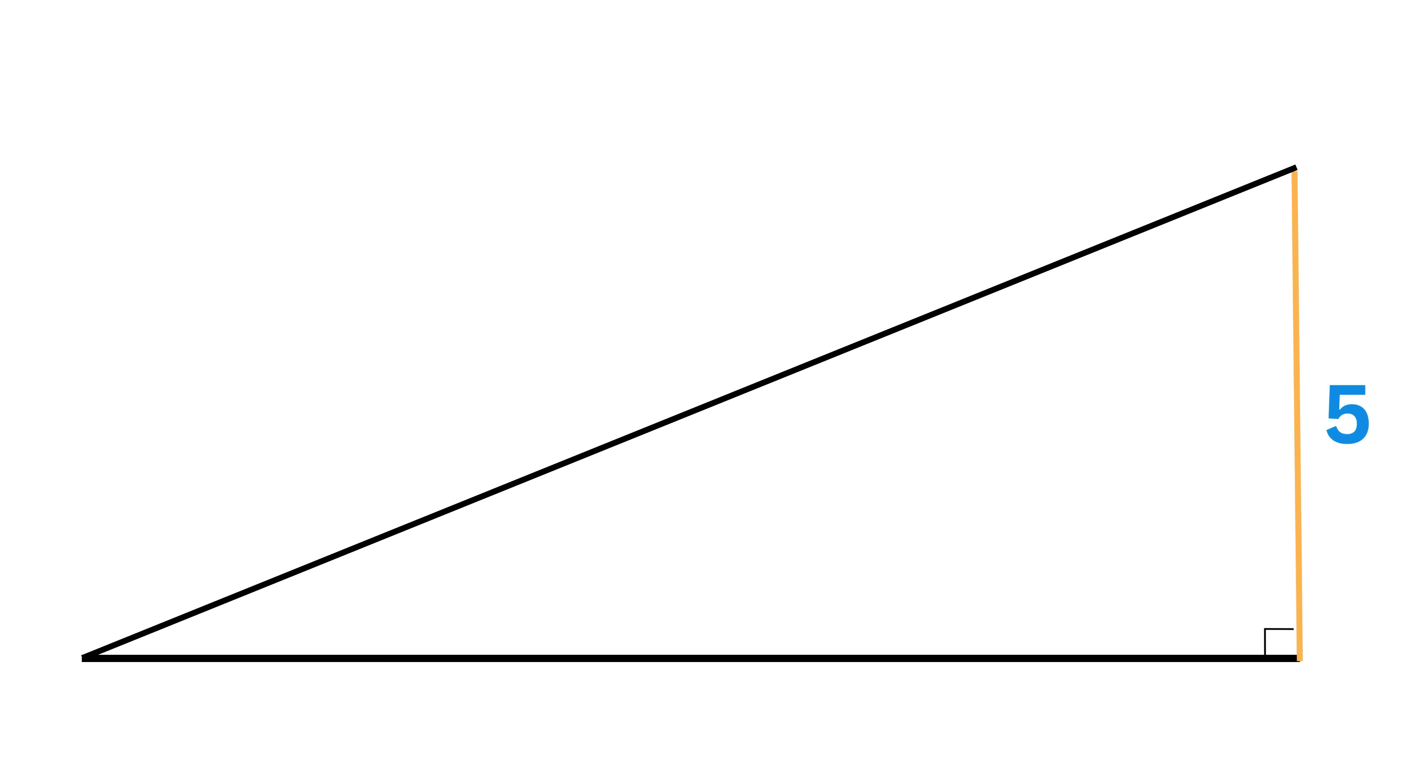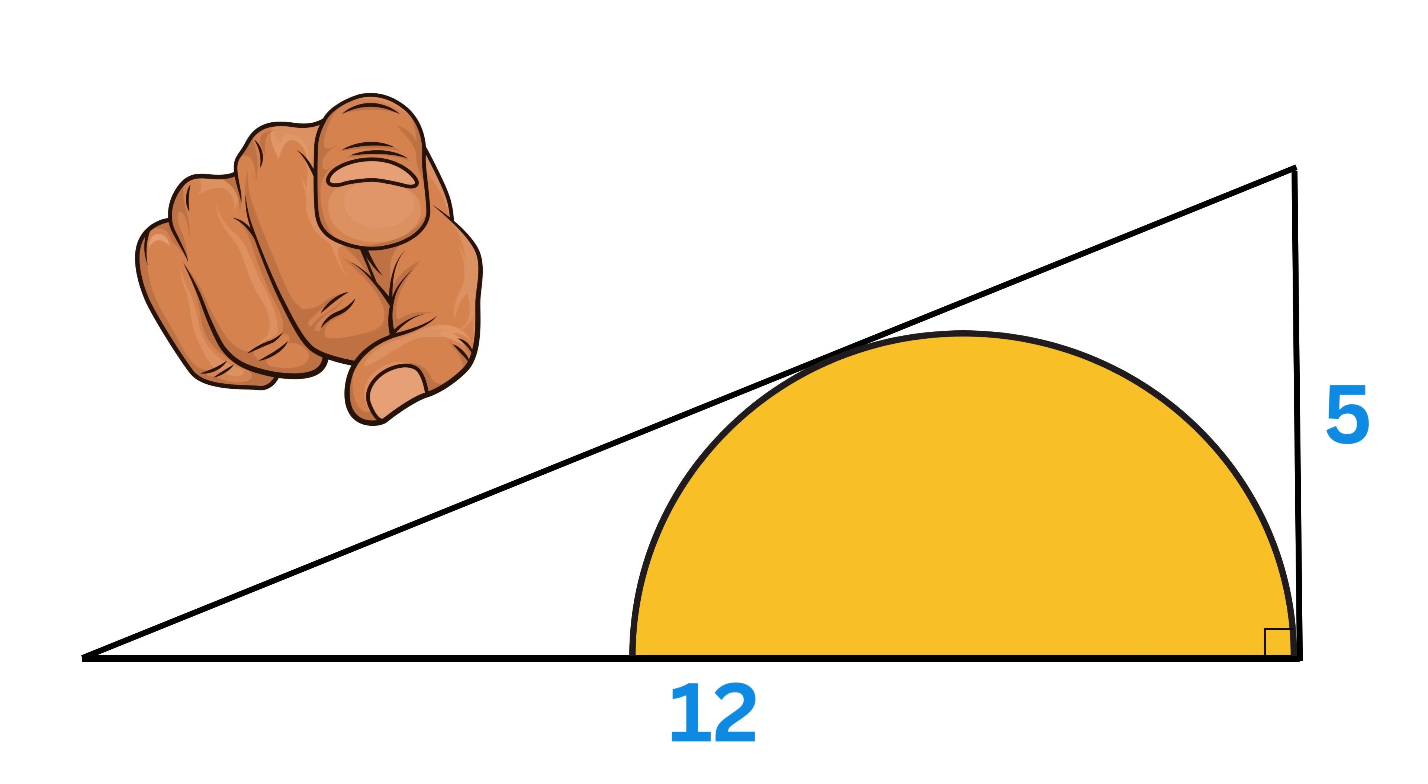We have a right triangle with one side of length 5 units and another side of length 12 units. A semicircle is inscribed inside this triangle such that one corner of the semicircle is at this vertex, and this side of the triangle touches the curved part of the semicircle at exactly one point. Our job is to find the area of this semicircle. Can you solve it?